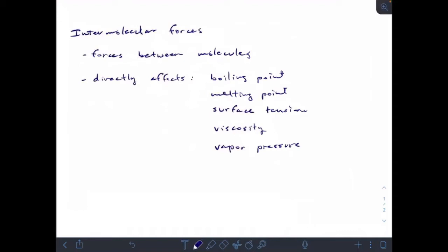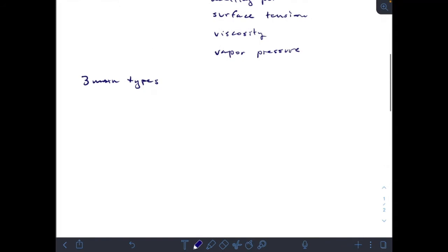Boiling point, melting point, surface tension, viscosity, vapor pressure are just a few. There are a couple others. I think capillary action is one of them. But depending on how strong or weak the forces are between individual molecules, we can have drastic differences between boiling points, melting points, all those sorts of things. Now, there are three main types of intermolecular forces, and there are a few subsets in there as well.